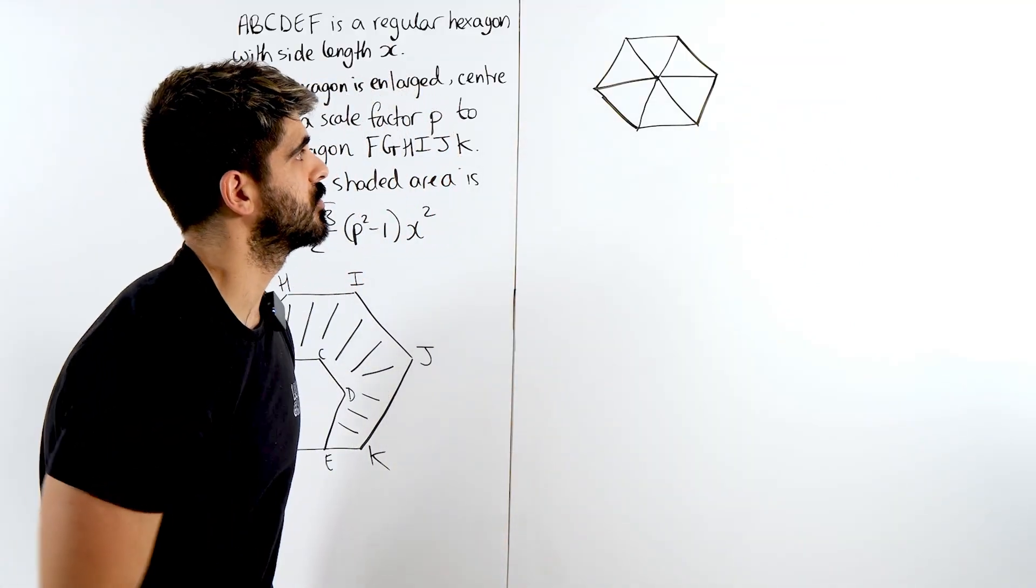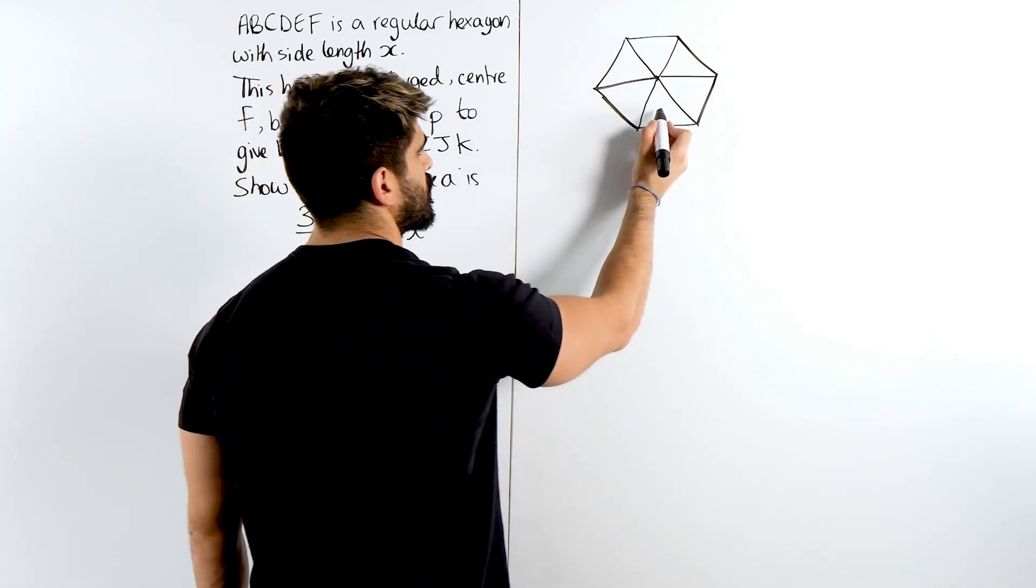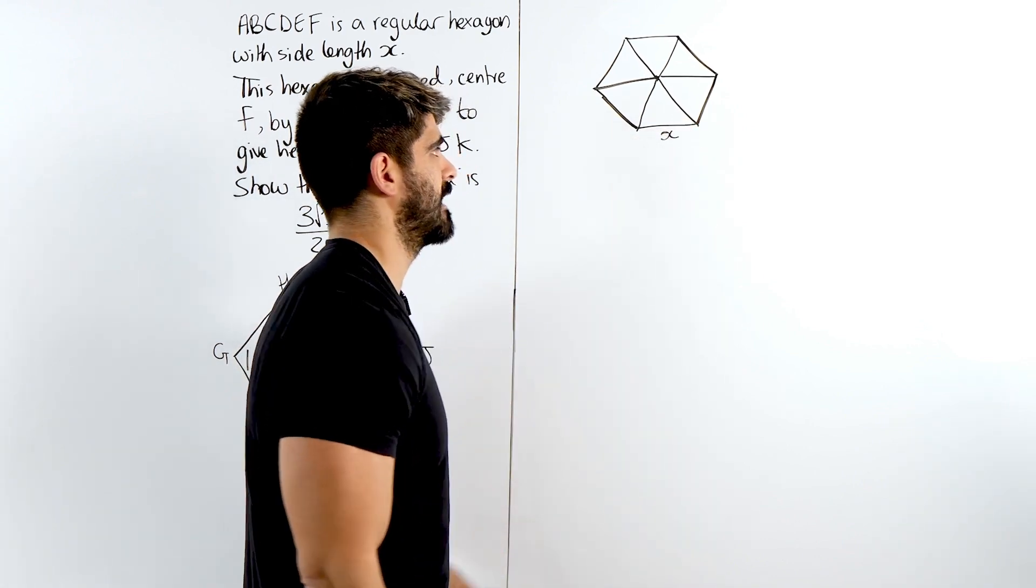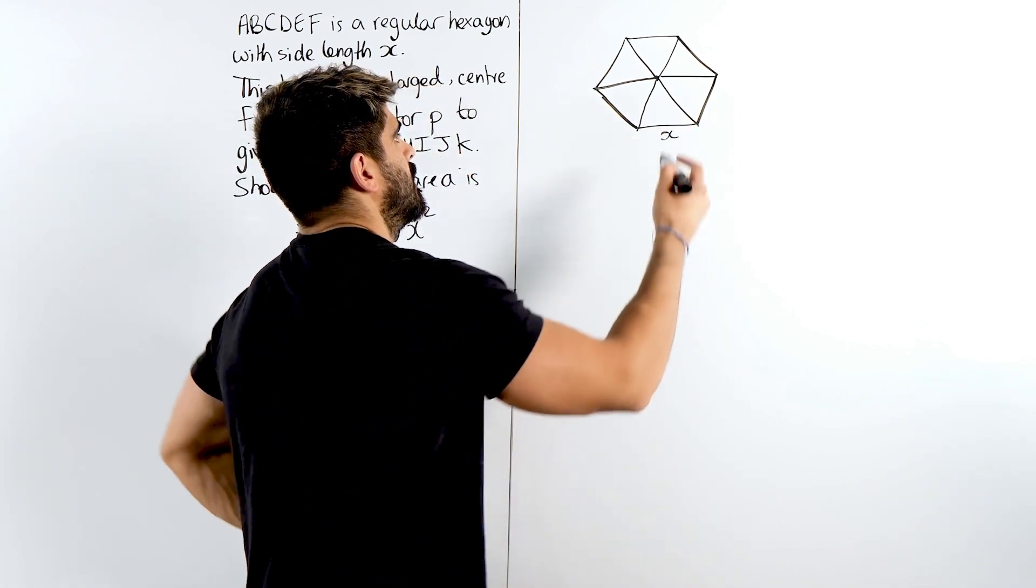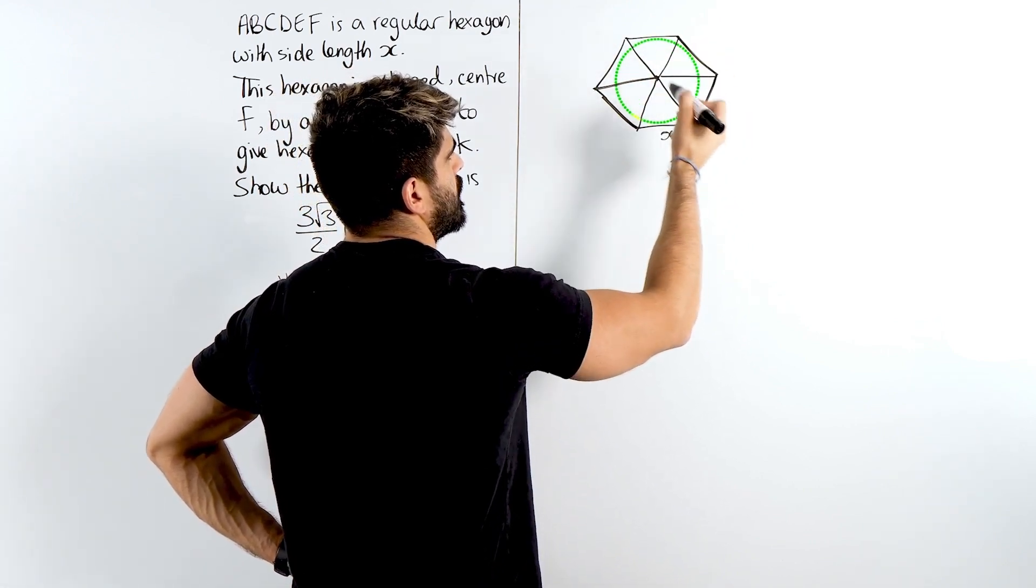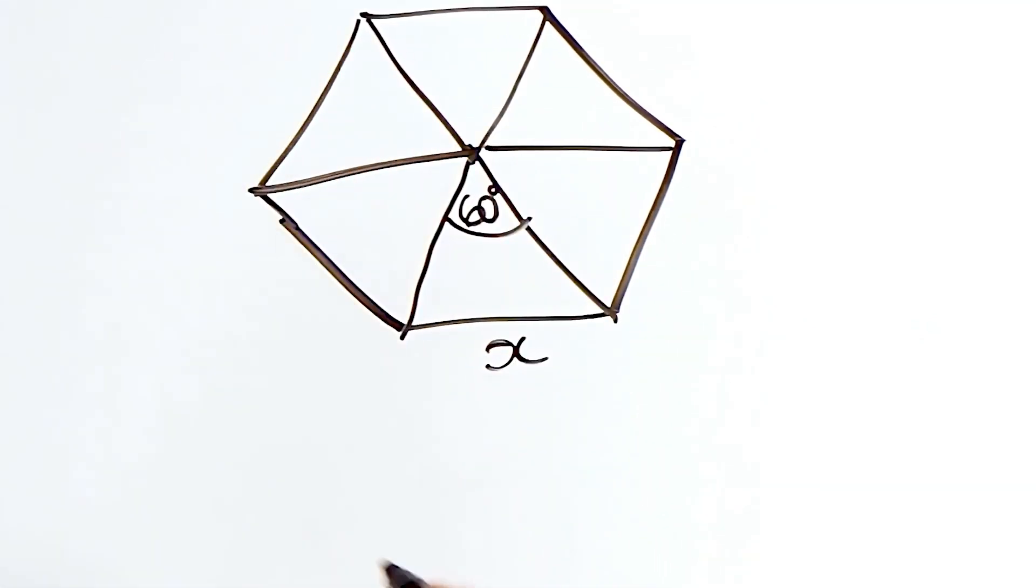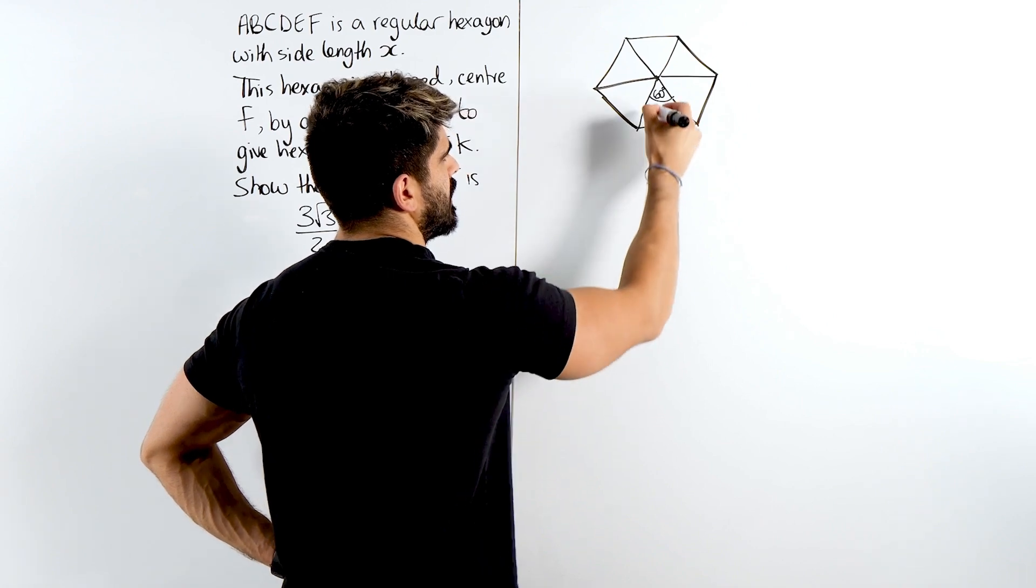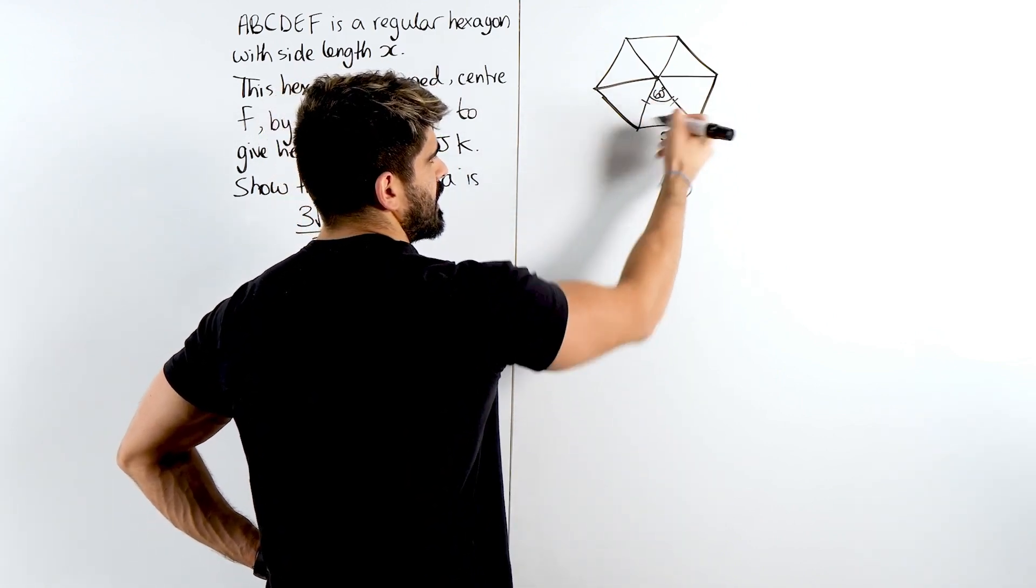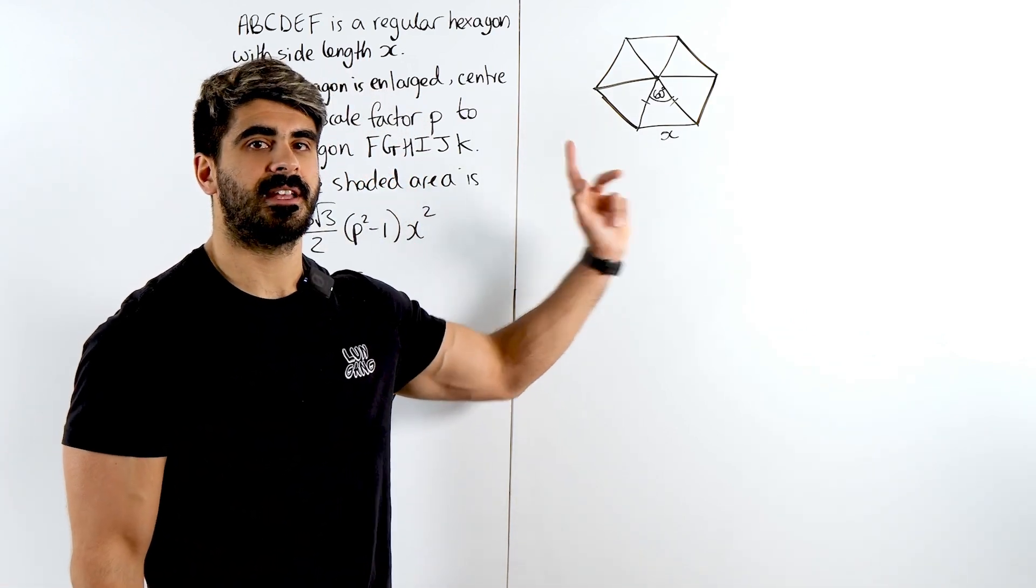And the way we do this is we split it up into six equal triangles. Not equilateral, just equal triangles. These are all isosceles triangles. I'm just going to focus on the bottom one. I'm just going to call this X. I want to find this area. Now, in this case, 360 degrees, we're splitting that up into six different triangles, which makes this 60 degrees. Well, actually, if these are isosceles and that is 60, it does actually make the other angles 60, which means it is equilateral.